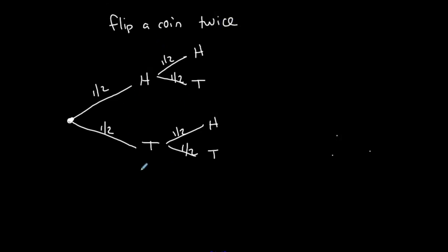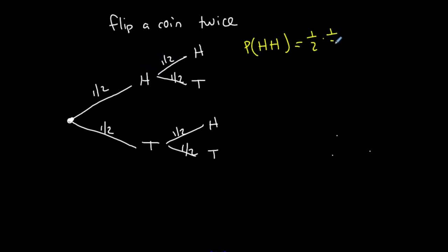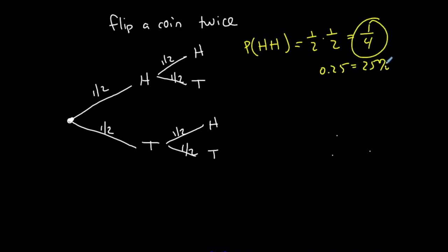Following the branch of heads then heads: one-half chance on the first branch times one-half on the second branch equals one-fourth. So there's a one-fourth, or 0.25, or 25% chance of randomly flipping a coin twice and getting heads both times. The probability of heads and then tails follows the same logic: one-half times one-half equals one-fourth, or 25%.